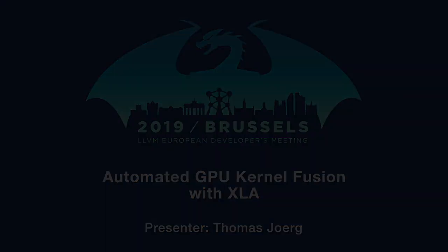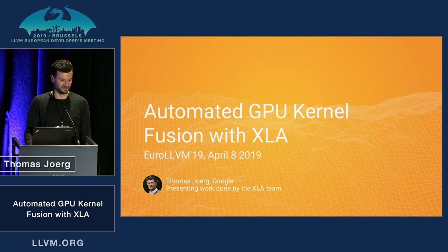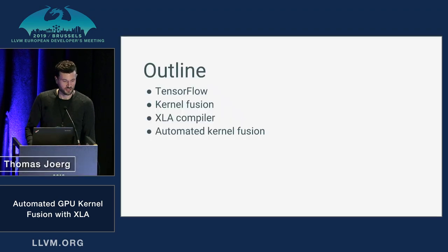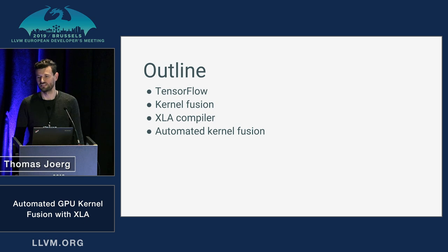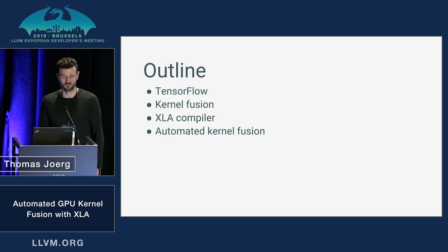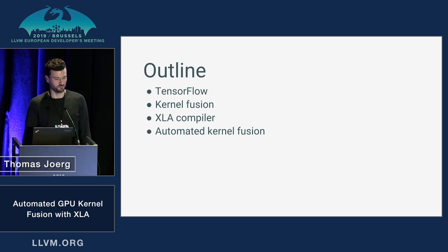My talk is going to be on XLA, which stands for Accelerated Linear Algebra. That's a compiler we built for the sort of dense linear algebra you commonly find in machine learning models. I should say that I'm presenting work done by many different people on the XLA team. XLA is developed as part of TensorFlow, which is Google's open-source machine learning framework. TensorFlow relies on a concept called kernel fusion, and I'll explain what that is and why it matters for performance.